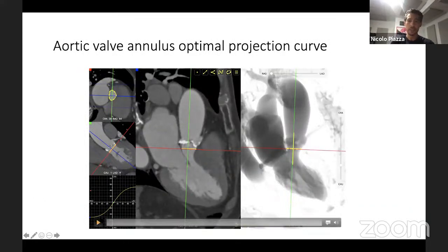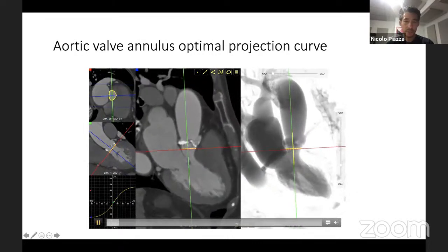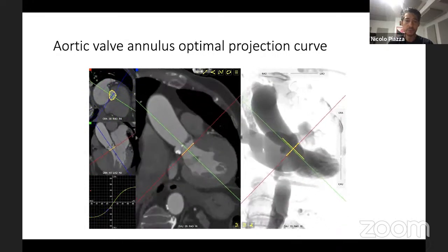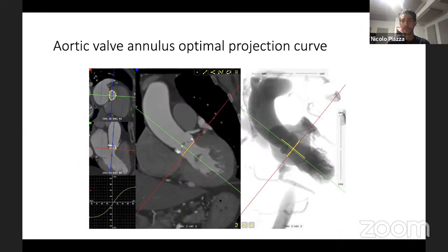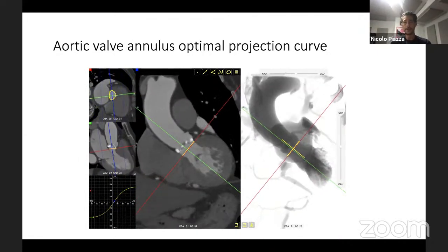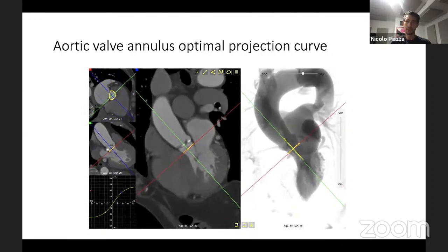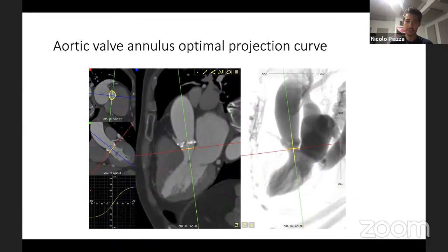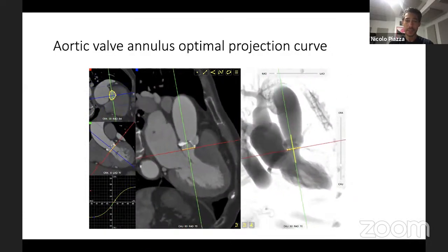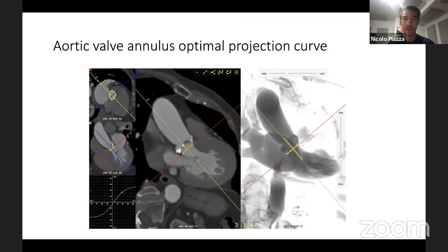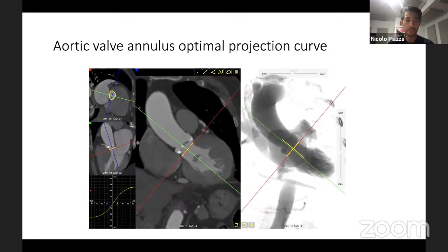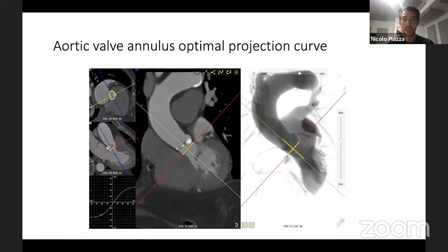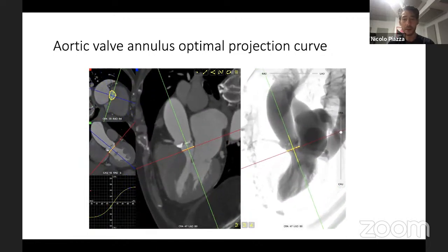This is the S-curve of the aortic valve. Starting in the RAO caudal projection, we move to AP, followed by LAO cranial, then extreme LAO cranial. As we drive along the aortic valve S-curve, we always see the valve in plane. The S-curve intersects RAO caudal, LAO caudal, and LAO cranial — so the aortic valve is typically seen on-face in RAO cranial.